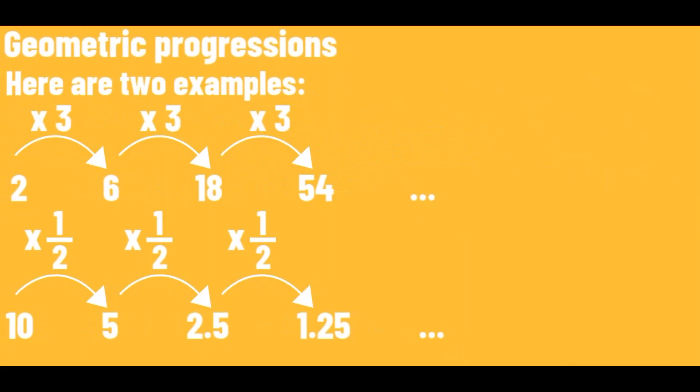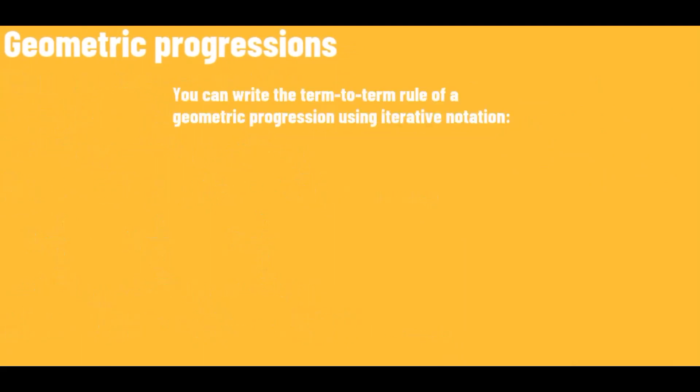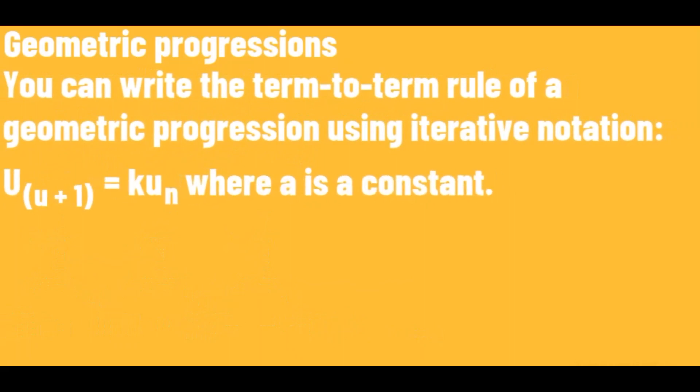Here are two examples of geometric progressions. You can write the term-to-term rule of a geometric progression using iterative notation.